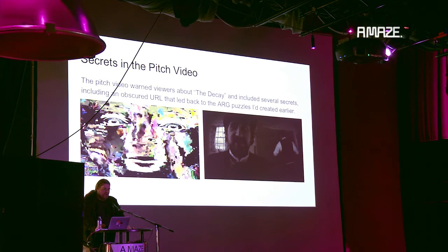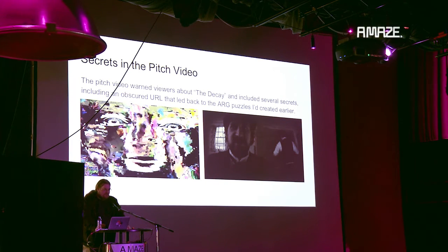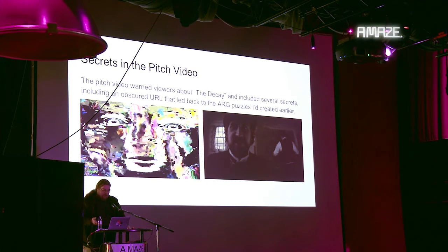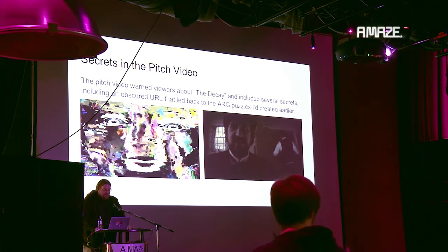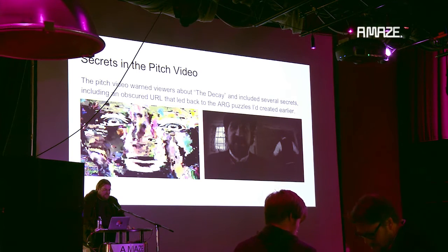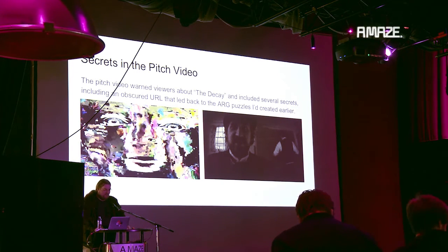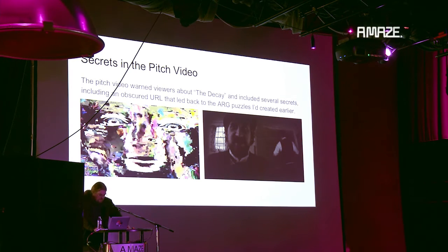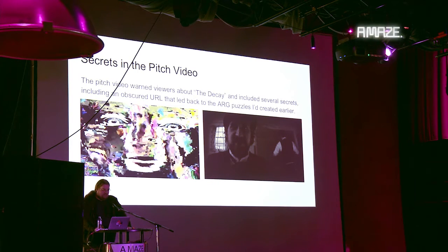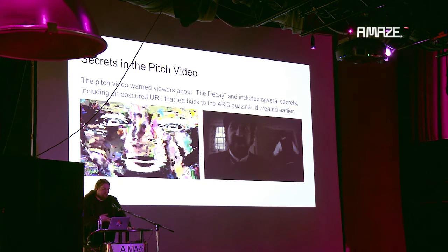The video had a bunch of weird secrets in it. For example, on the left there's a glitch face giving you a password. On the right, the Ambroji brothers who made Jamestown are giving you a warning from the past. In the background on a blackboard there is a URL — you couldn't even see it in the Kickstarter video because it was too low-res; I had to upload it to YouTube. That URL leads to the puzzles I created a year earlier.